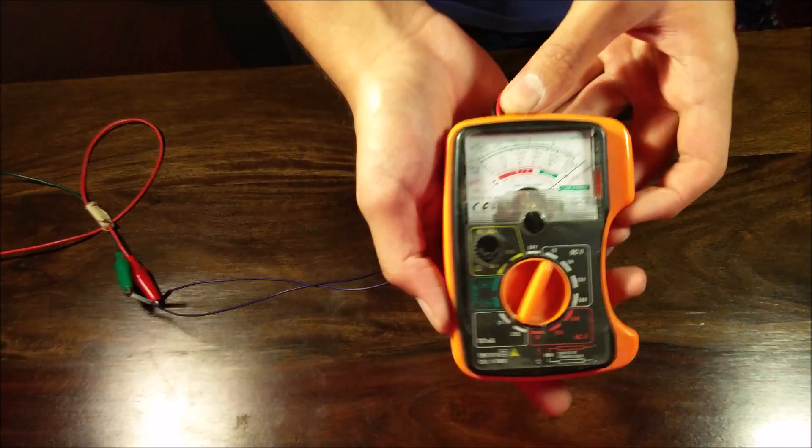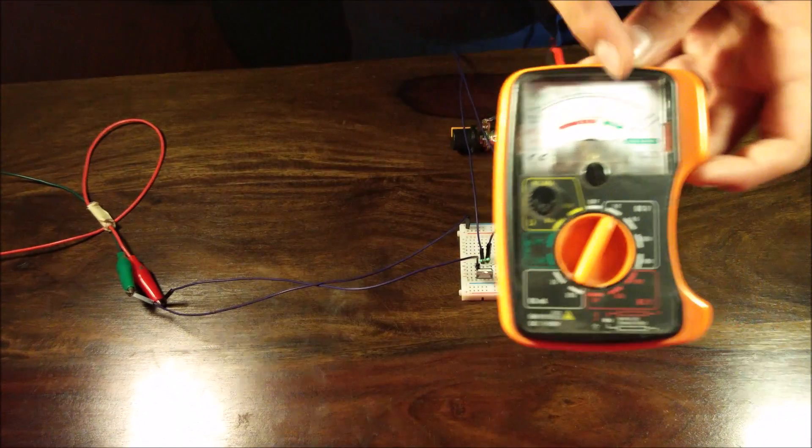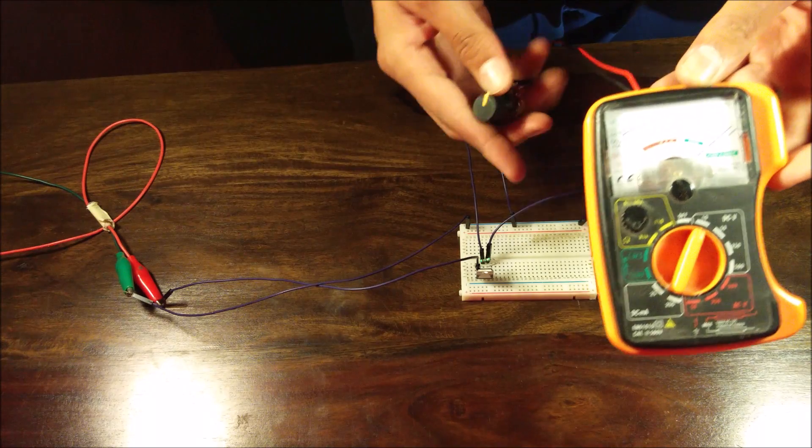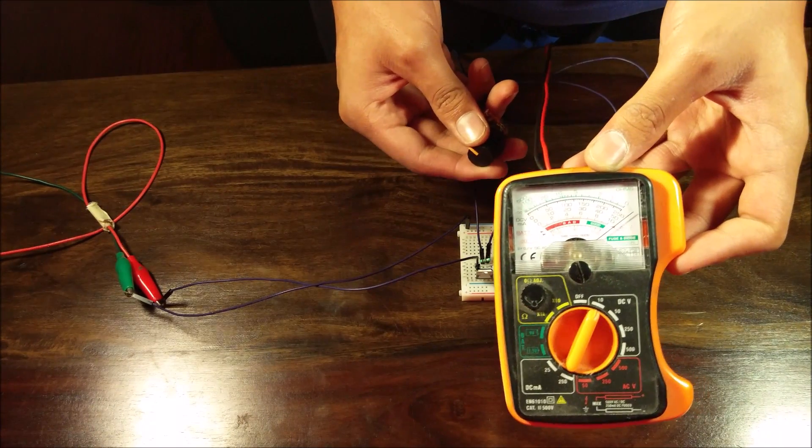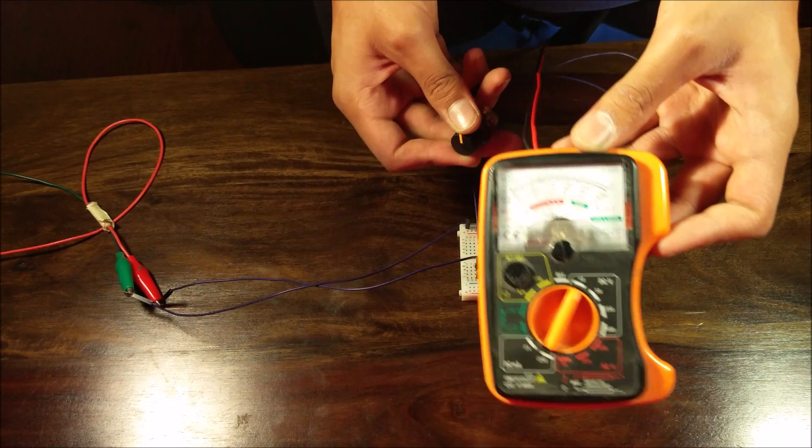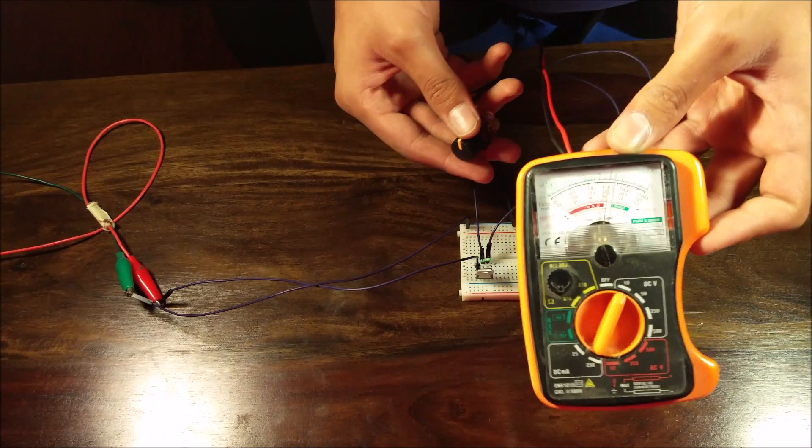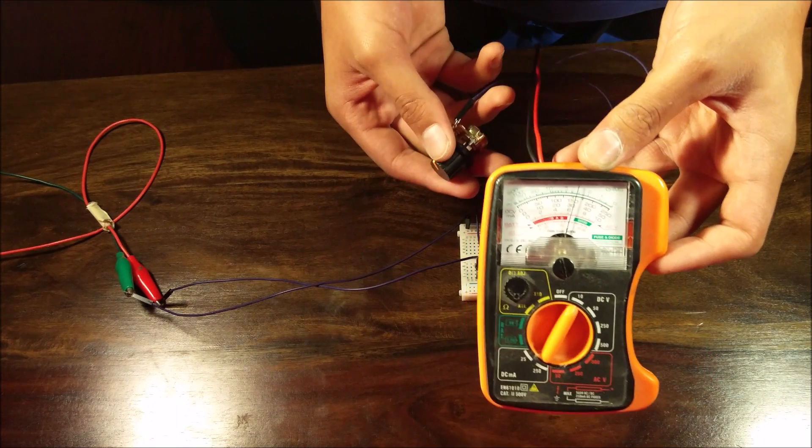Now I've got the multimeter set on 10 and as you can see right now I'm reading about 12 volts. As I turn the potentiometer you can see the voltage drops and rises, drops and rises and I can even get it to stop at one point. We are now controlling the voltage through an LM317.